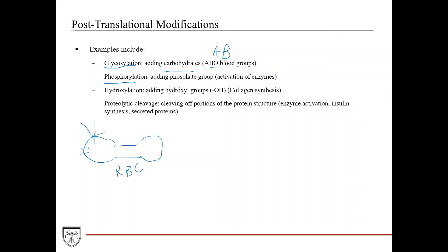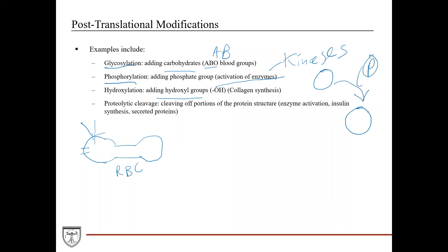Phosphorylation is a very high-yield modification, especially in biochemistry, and is heavily involved in metabolic pathways for enzyme activation — we'll talk more about this in Unit 3. Hydroxylation — adding hydroxyl groups — is really involved in collagen synthesis. Phosphorylation is carried out by kinases, which are proteins that add phosphate groups to a protein. And proteolytic cleavage involves cleaving off portions of the protein structure to usually result in enzyme activation.